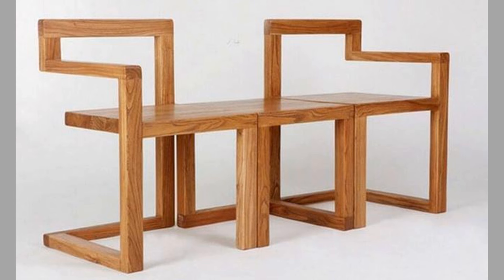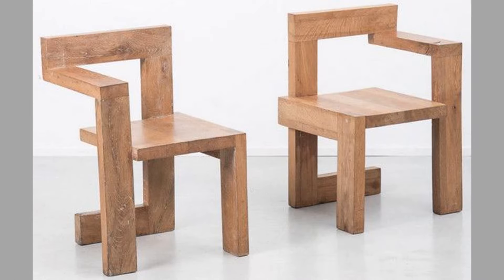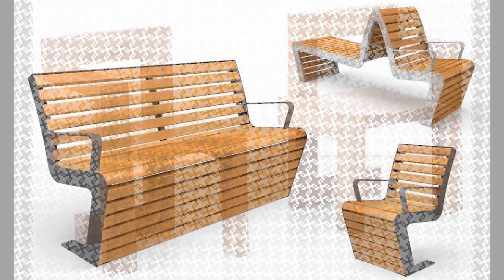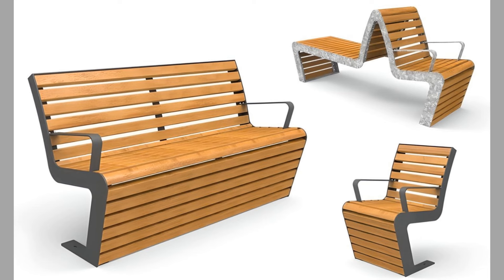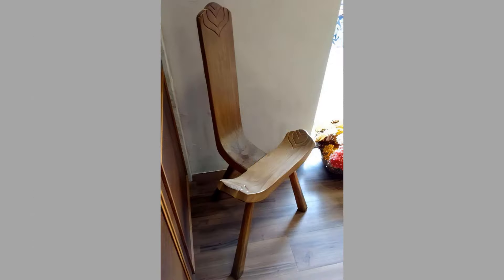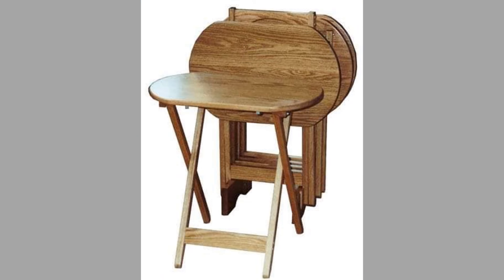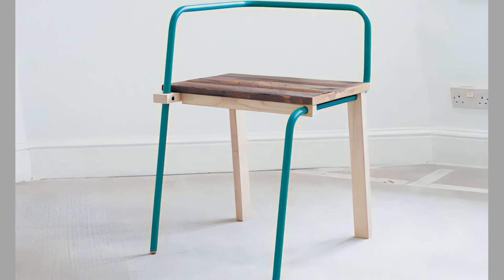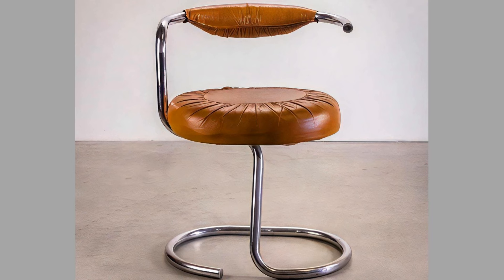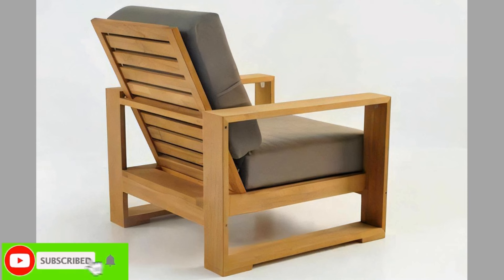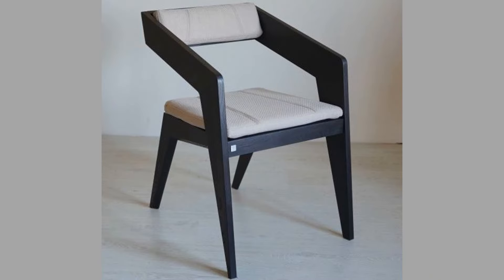The materials and construction techniques used in chair manufacturing have evolved significantly over time. Traditional chairs were primarily crafted from wood, with species such as oak, mahogany, and walnut favored for their strength, durability, and aesthetic appeal. The use of upholstery, padding, and textiles has also become integral to chair design. In contemporary chair design, a wide range of materials are employed including metal, plastics, fiberglass, and composite materials, allowing designers to create innovative and groundbreaking chairs that push the boundaries of traditional furniture construction.